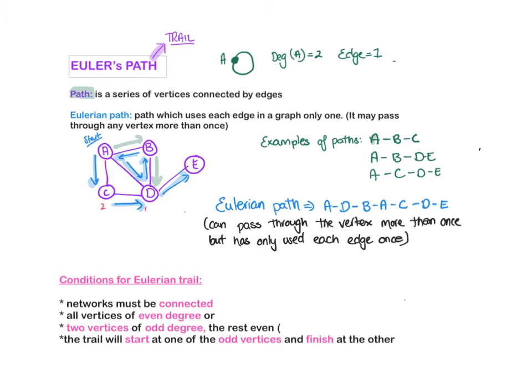So a Euler path or trail is a series of vertices connected by edges. The one with the E, the Euler, is the one to do with the edges. So a Eulerian path which uses each edge of the graph only once is called a Eulerian path. Over here in the green, we can do many paths. So if I just go to A, B and then to D, that's a path.